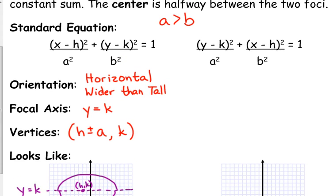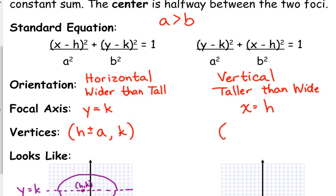If y is over the bigger number, then it's vertically oriented, and so that means that it's taller than it is wide. And this time, vertical lines are x equals, so it would be x equals the x coordinate of the center, so x equals h is the focal axis. And this time, the vertices, they're on h, and then it would be k plus or minus a because you're varying vertically, so you add that to the y.